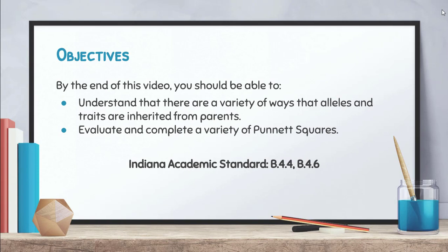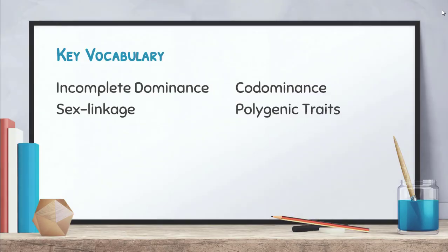By the end of this video you should be able to understand that there are a variety of ways that alleles and traits are inherited from parents, and you should be able to evaluate and complete a variety of different Punnett squares. Key vocabulary terms include incomplete dominance, sex linkage, co-dominance, and polygenic traits.